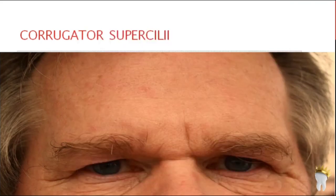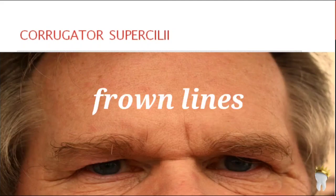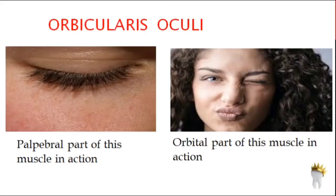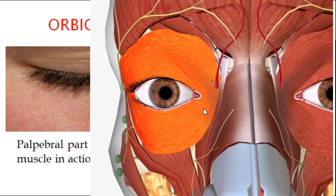Corrugator supercilii draws the eyebrows medially and downwards, producing vertical glabellar wrinkles also called frown lines — that's how you look when you're angry, frustrated, or thinking about a difficult exam question. The next important muscle around the eye is orbicularis oculi.